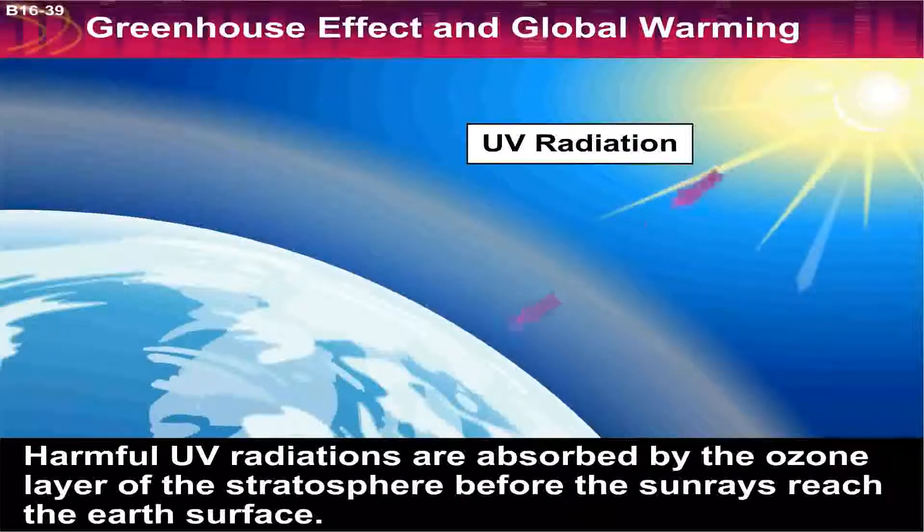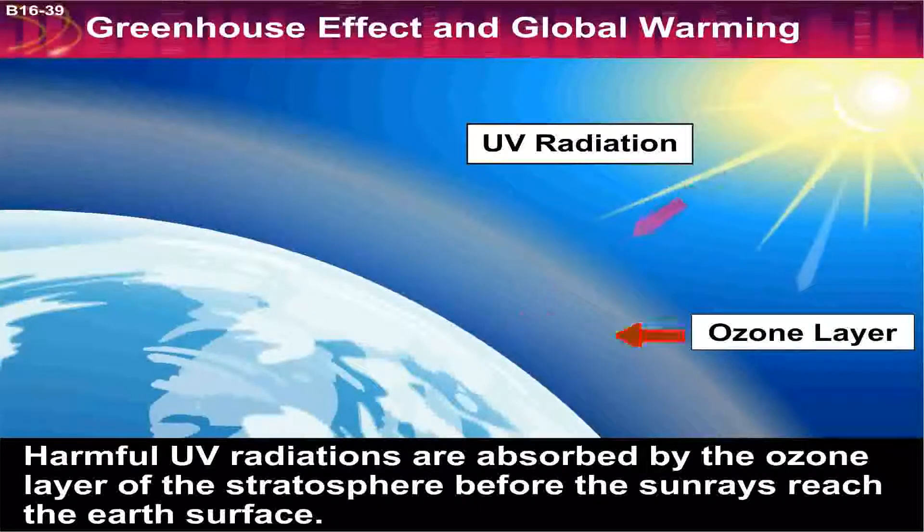Harmful UV radiations are absorbed by the ozone layer of the stratosphere before the sun rays reach the earth's surface.